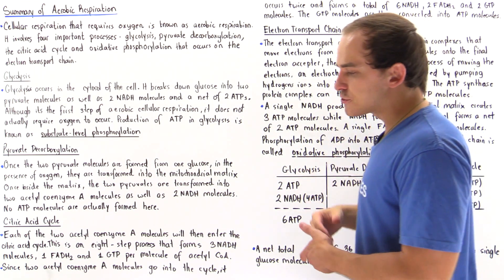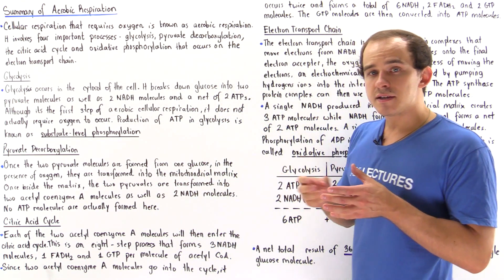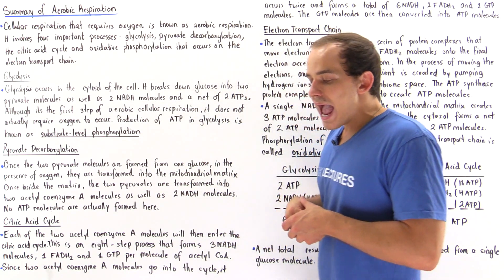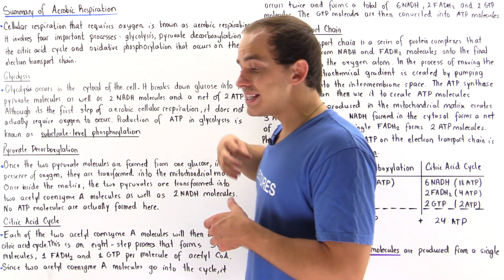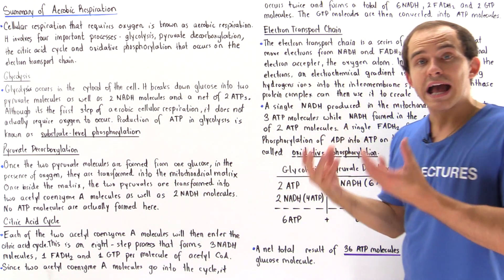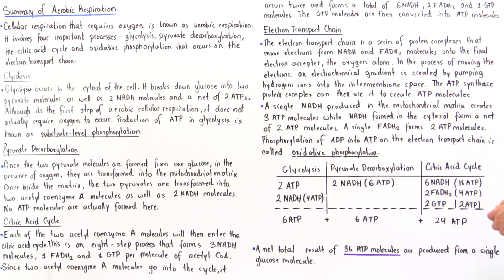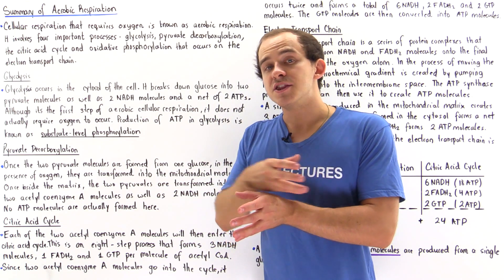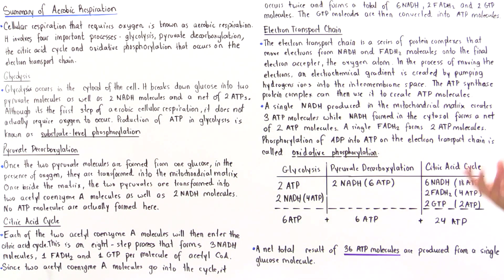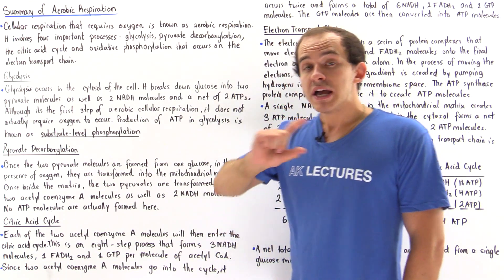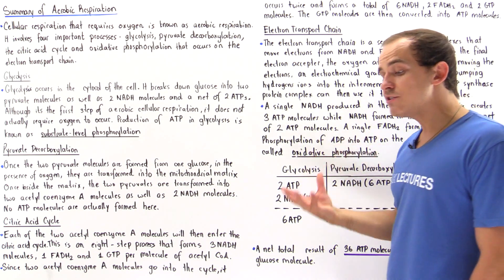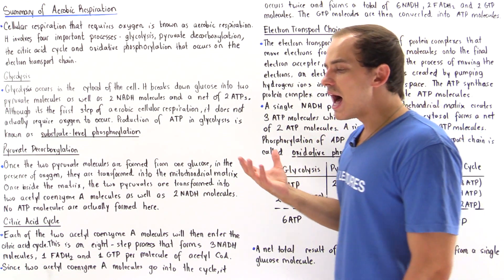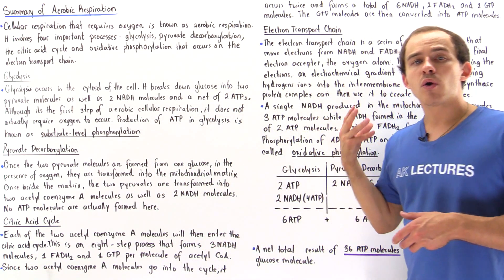The electron transport chain is a series of protein complexes found on the inner membrane of the mitochondria. The NADH and FADH2 molecules transfer electrons onto the electron transport chain. These electrons eventually reduce oxygen and form water. In the process, the electron transport chain establishes an electrochemical gradient between the intermembrane space of the mitochondria and the mitochondrial matrix. The protein ATP synthase utilizes this electrochemical gradient to synthesize ATP molecules.